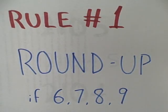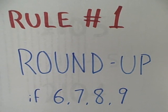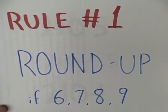One of the rules for rounding is that we round up if the number to the right happens to be larger than five — that is, a six, seven, eight, or nine.